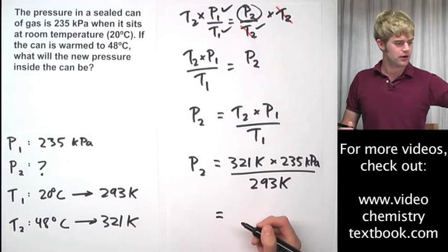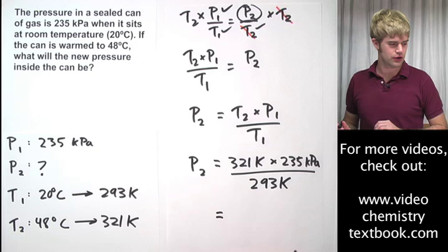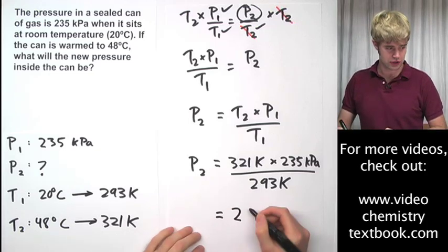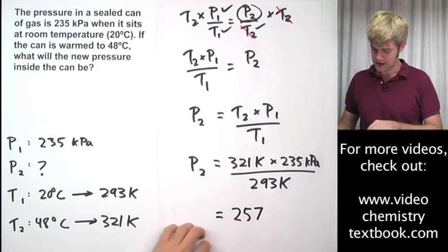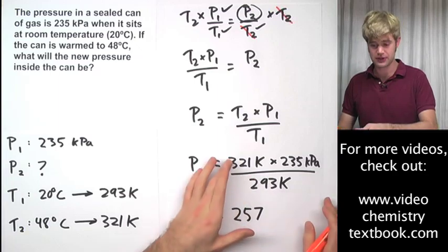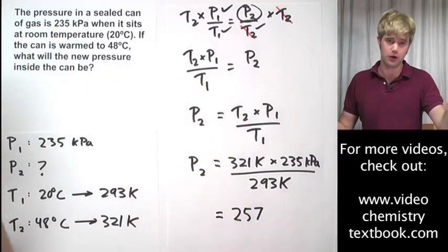So we go ahead, we plug that into our calculators and the answer that we're going to get out, I'm going to round this to three significant figures, is 257. Now, what are the units I'm going to use? Well, it depends on what cancels out here. Obviously, we know this is going to be pressure so we could just say, all right, well, you know it's going to be kPa.